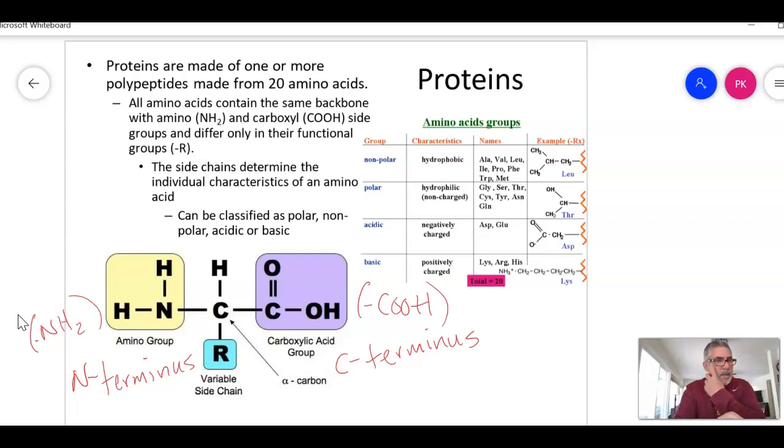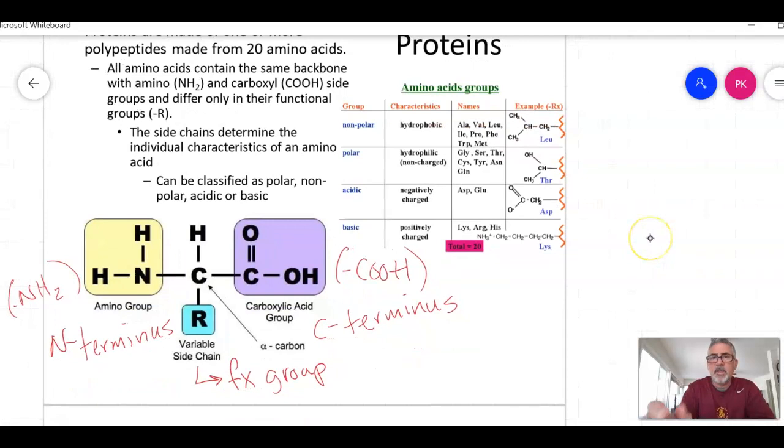You'll often see them written like that. And then the R chain, this is the alpha carbon in the middle, and the side chain is what they call the functional group. All of the different amino acids, all 20 of them, have different R groups that make them different functionally. These R groups make them either nonpolar or polar, acidic or basic.